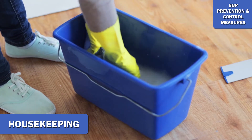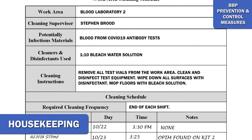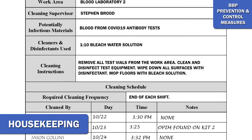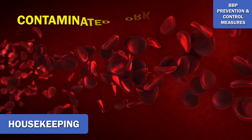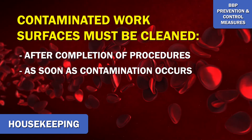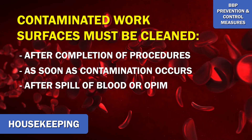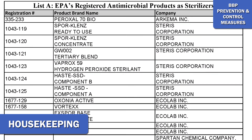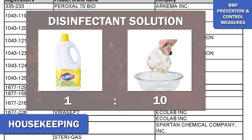The workplace must be maintained in a clean and sanitary condition. The employer shall implement an appropriate written schedule for cleaning and decontamination based upon the location within the facility, type of surface to be cleaned, type of soil present, and tasks or procedures being performed in the area. Contaminated work surfaces shall be decontaminated with an appropriate disinfectant after completion of procedures, immediately or as soon as feasible when surfaces are overtly contaminated, or after any spill of blood or other potentially infectious materials, and at the end of the work shift. Disinfectants must be EPA approved. OSHA allows for a disinfecting solution of one part bleach to ten parts water.